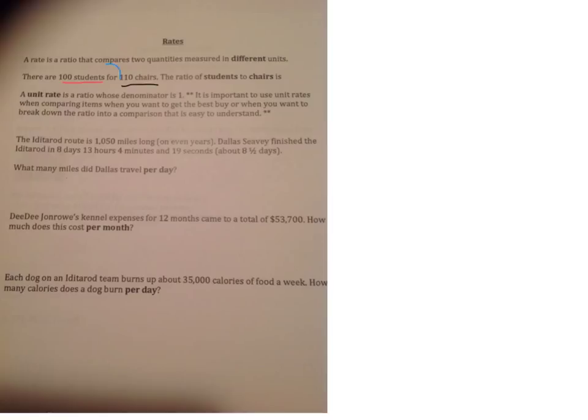Here we have the word for. You'll see for. You'll see to. That's letting you know where that separation is. So the ratio of students to chairs, students is first. So it is 100 to 110. And then you can go ahead and simplify that as well.